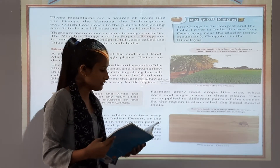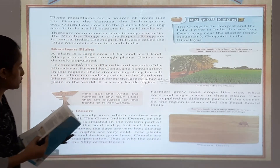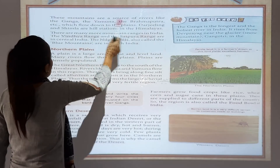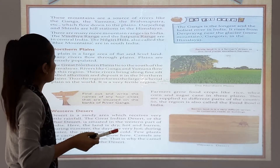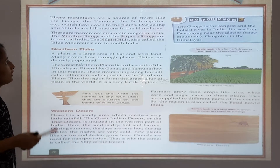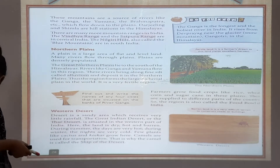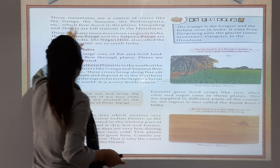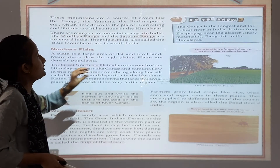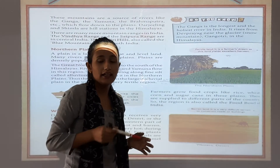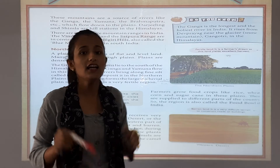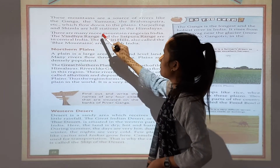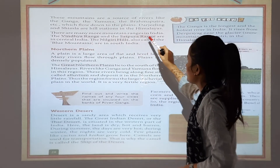Northern mountains are a source of rivers like the Ganga, Yamuna, and the Brahmaputra, which flow down to the plains. Darjeeling and Simla are hill stations in the Himalayas.